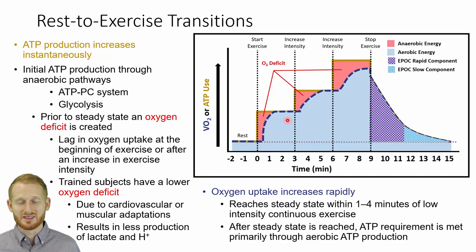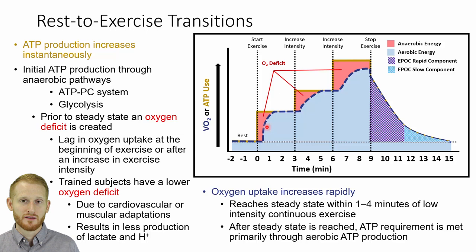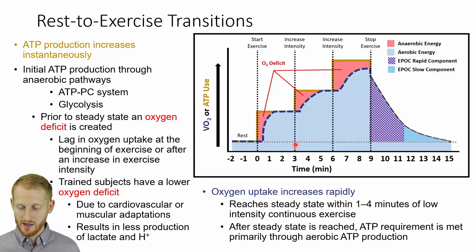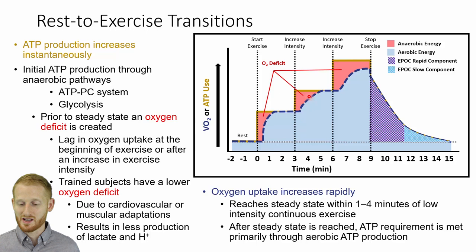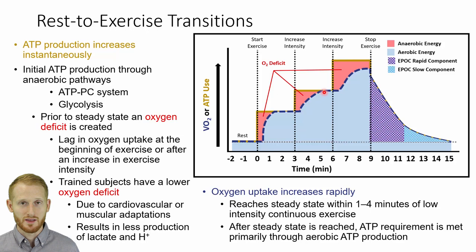Typically for an average untrained person, going from rest to moderate intensity exercise requires somewhere between one and four minutes to reach a steady state with aerobic metabolism — in other words, for VO2 to reach the flat line and fully support the exercise intensity. It's a little longer for higher intensities and shorter for lower ones. Going from rest to two miles per hour might take a minute, whereas six miles per hour on a treadmill — moderate to vigorous for most people — will take around one and a half to three minutes. We call this plateau a steady state.